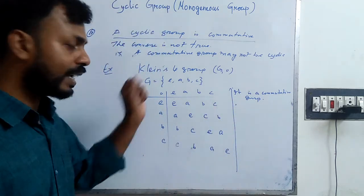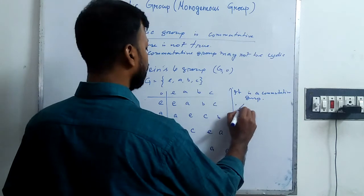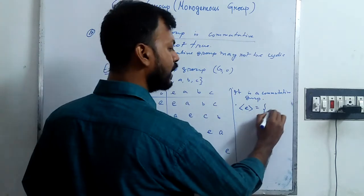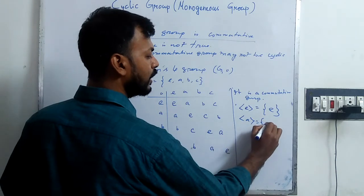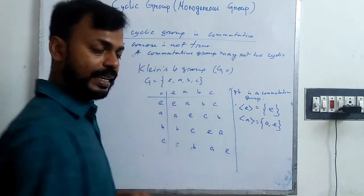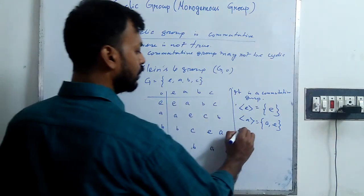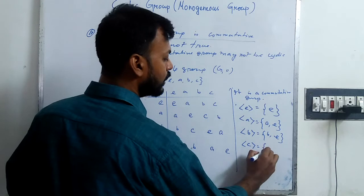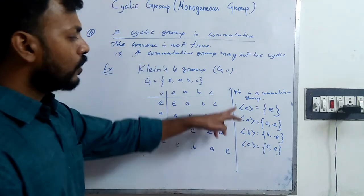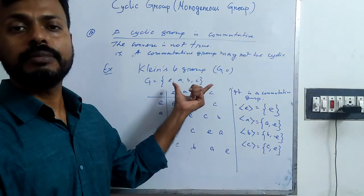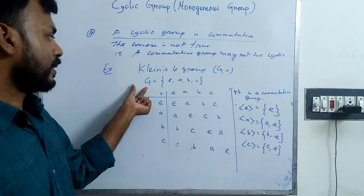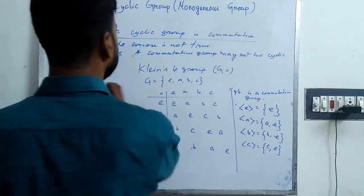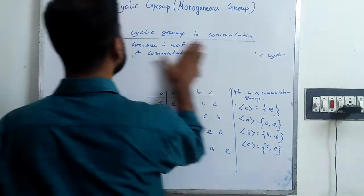The question is: is it cyclic? We will take each element one by one. E will generate only E. A will generate A and E, because A squared equals E. B will generate B and E. C will generate C and E. So no element generates all the elements of this group. Therefore we can claim that G is not a cyclic group, and a commutative group may not be a cyclic group.